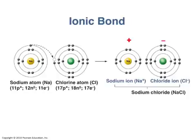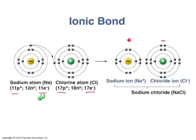Before atoms form bonds, they are electrically neutral — they have equal numbers of protons and electrons. See how sodium has 11 protons and 11 electrons, and chlorine has 17 protons and 17 electrons? So both of these atoms have equal numbers of positive and negative charges. When an ionic bond is formed, one atom loses an electron and the other atom gains an electron.